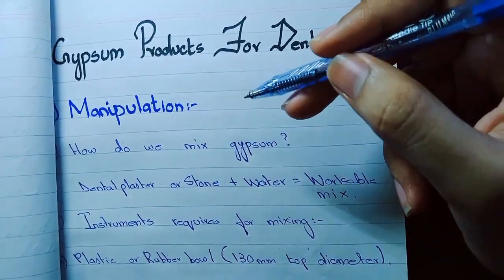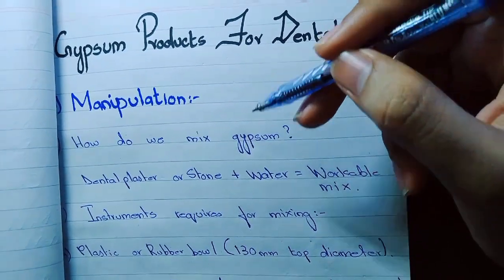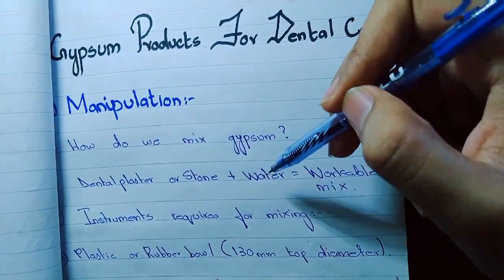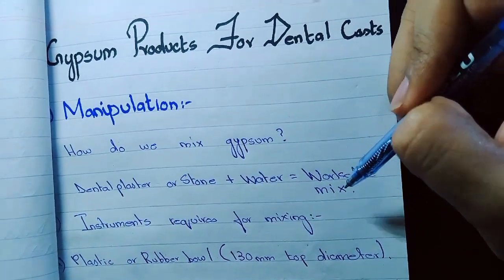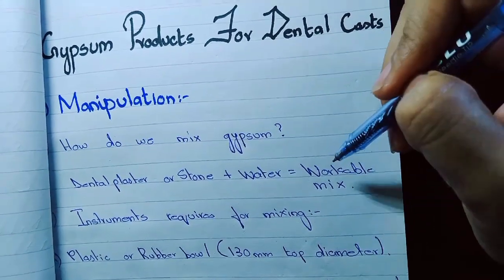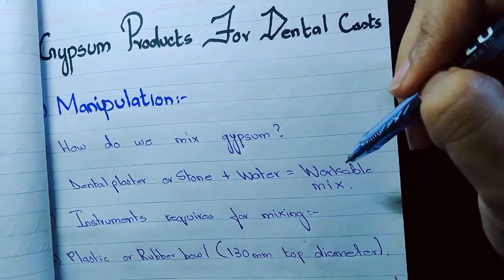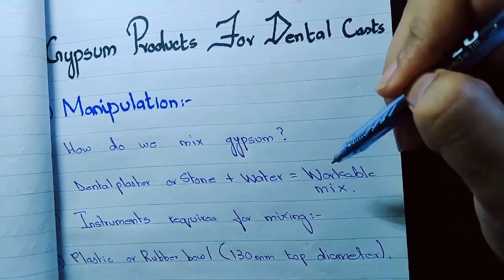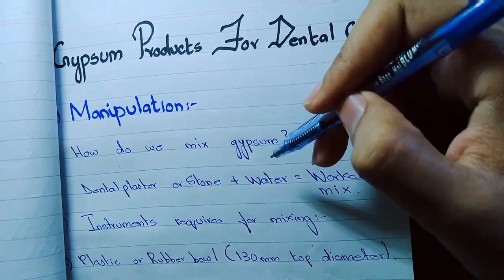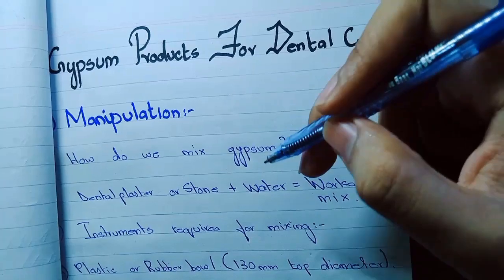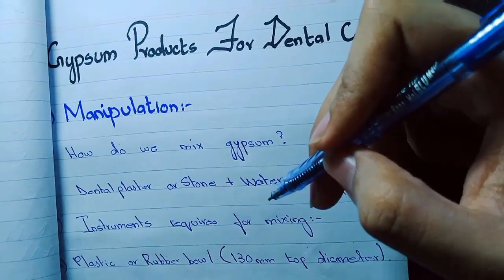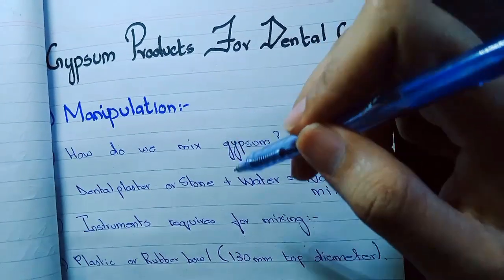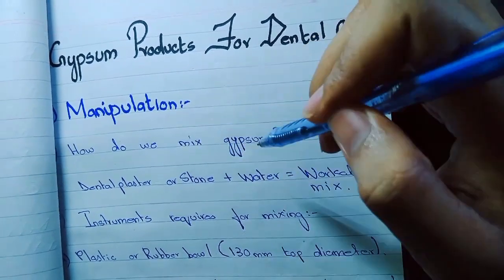Starting with manipulation — how do we mix gypsum? It's simple: we take the powder of dental plaster or dental stone, mix it with water, and get a workable mix. As soon as we get the workable mix, we can use it for pouring into the impression to make models or dies. The mixing motion should be a circular stirring motion to get a good workable mix.